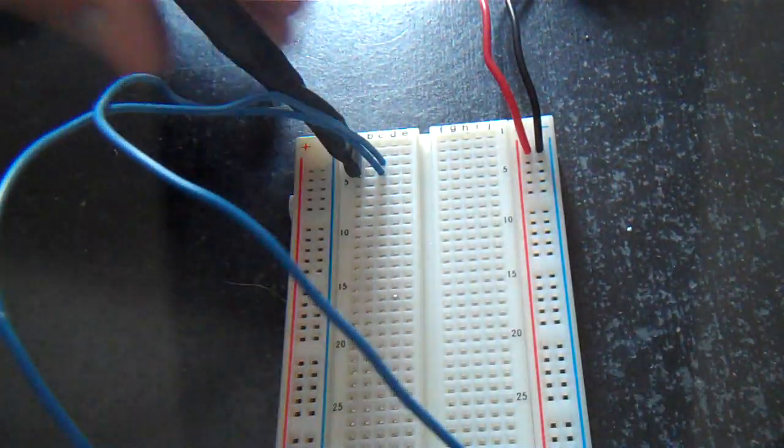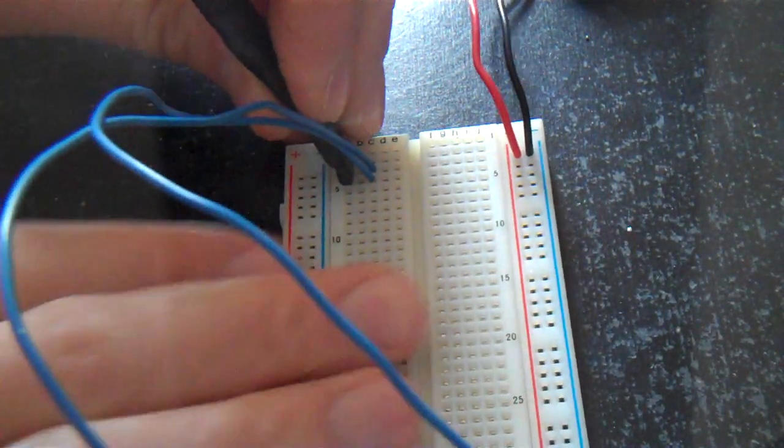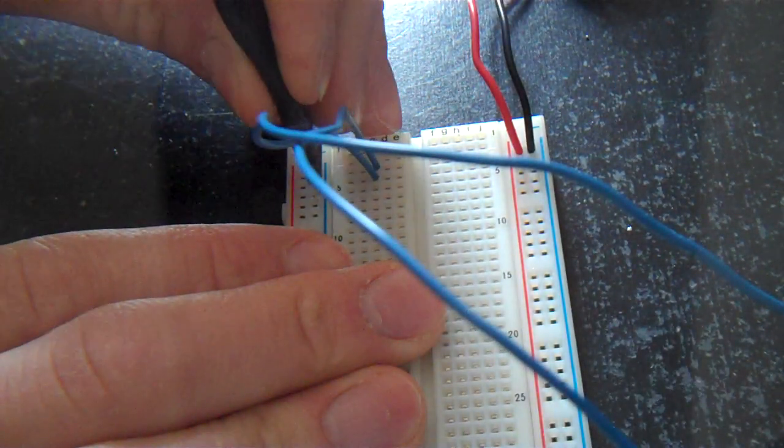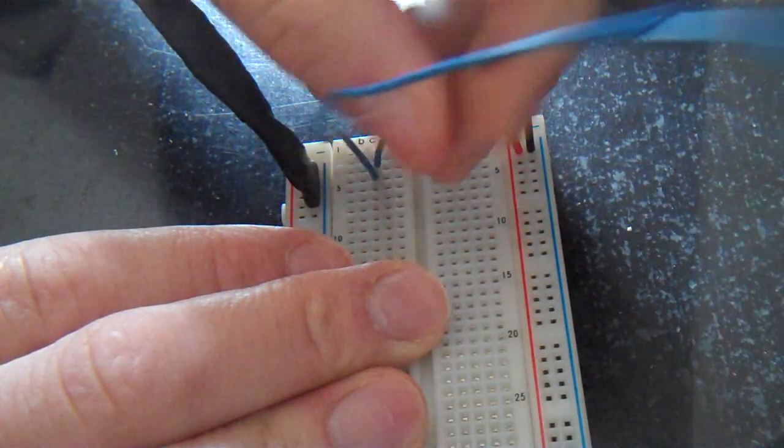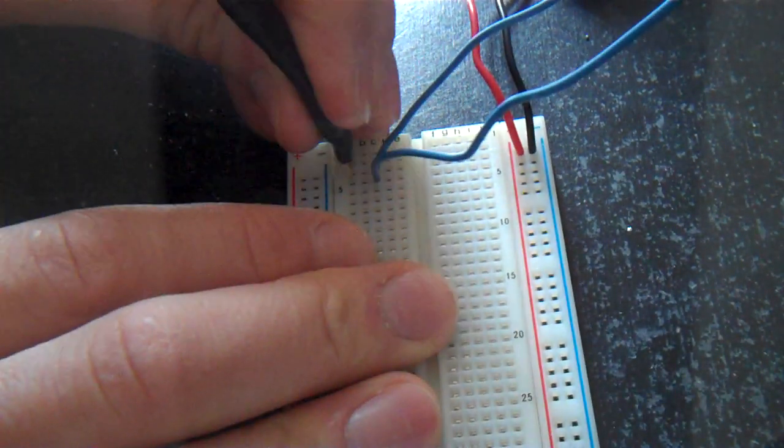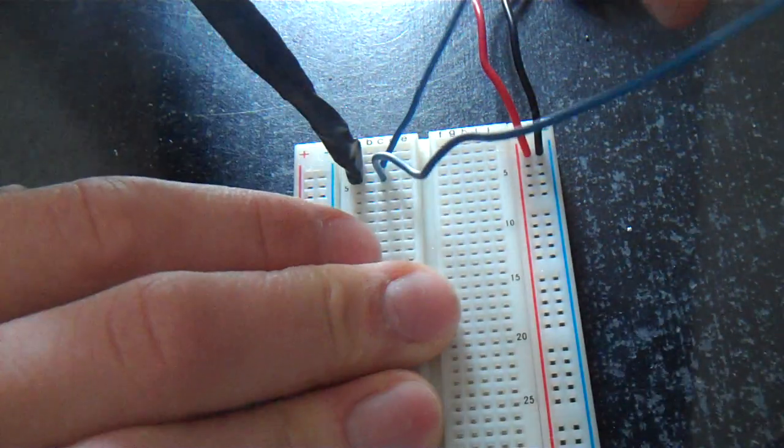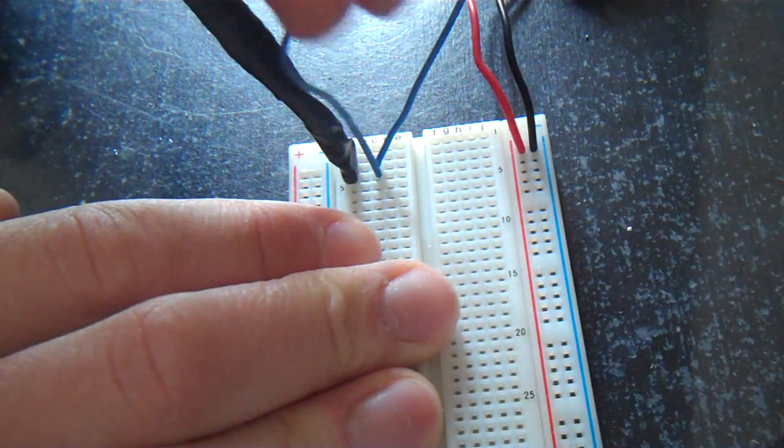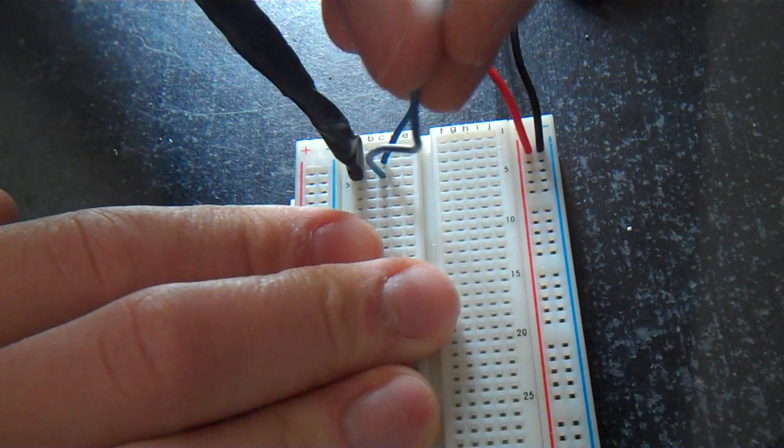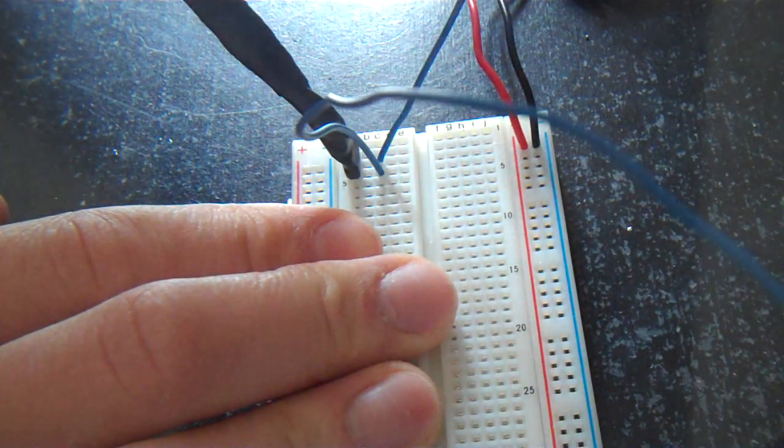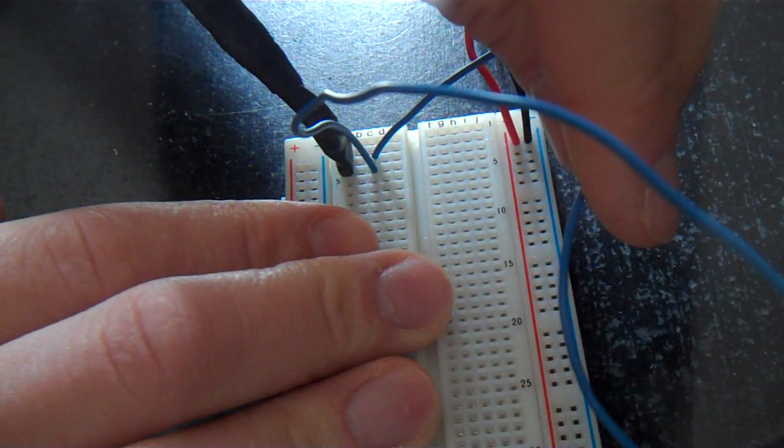On my breadboard, I have an audio connector that I made, and then these two blue wires coming from it. This one here, the one all the way to the right, is for the right channel audio, and then the one in the center is ground.